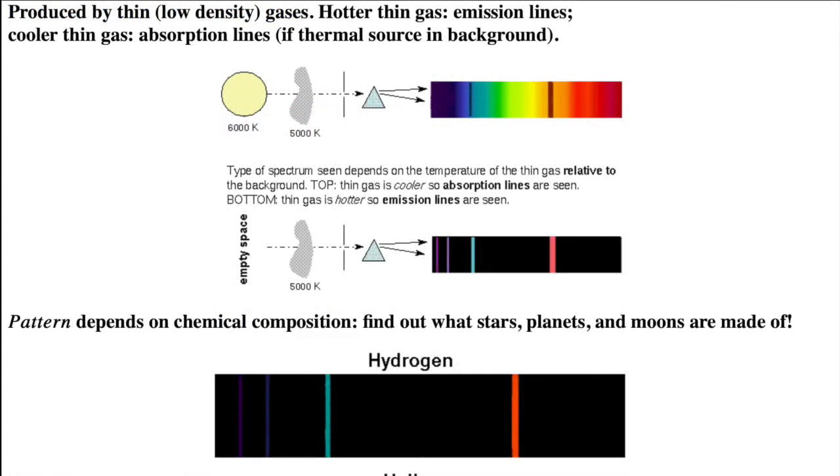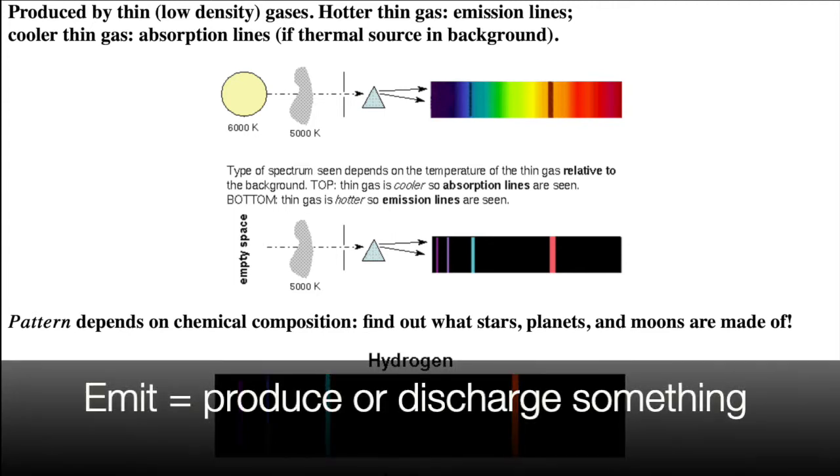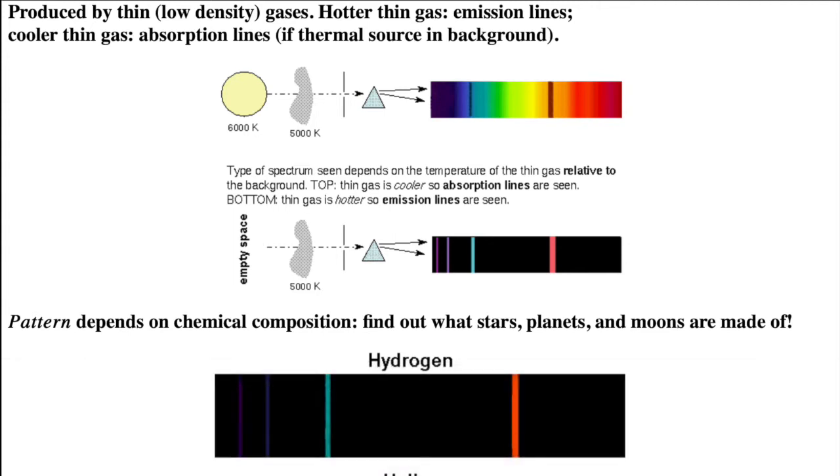The type of spectrum you see depends on the temperature of the thin gas relative to what's in the background behind the thin gas cloud. If the thin, low-density gas cloud is hotter than what's in the background, you'll see emission lines plus the spectrum of the background object. The emission lines are produced or emitted directly by the hot thin gas cloud. The picture shows nothing in the background, so you see the emission lines on top of a black background.